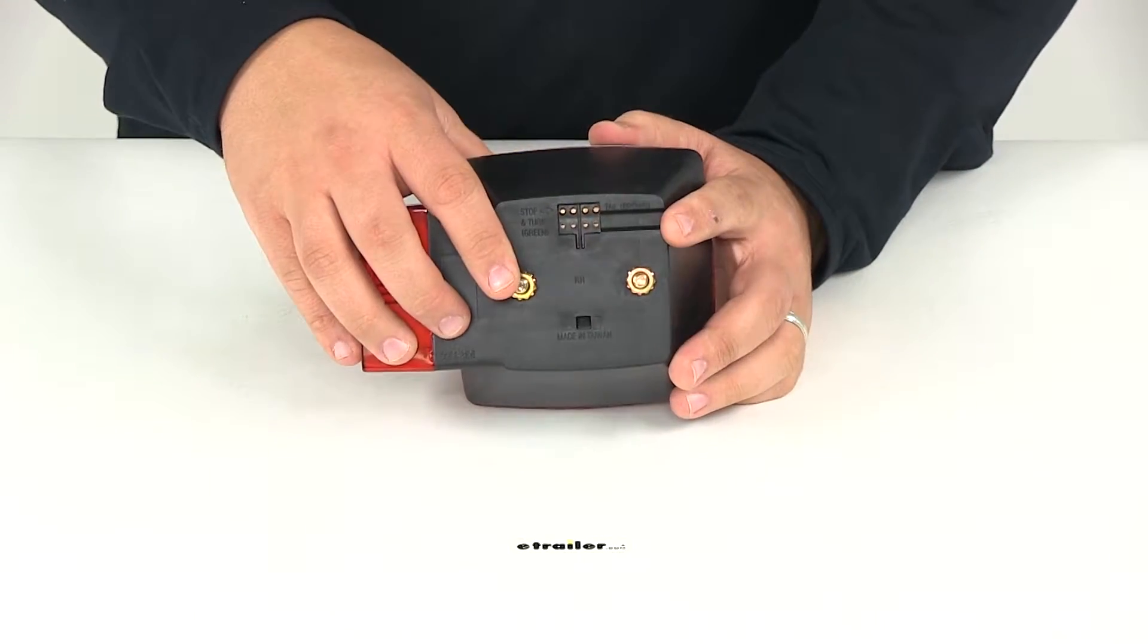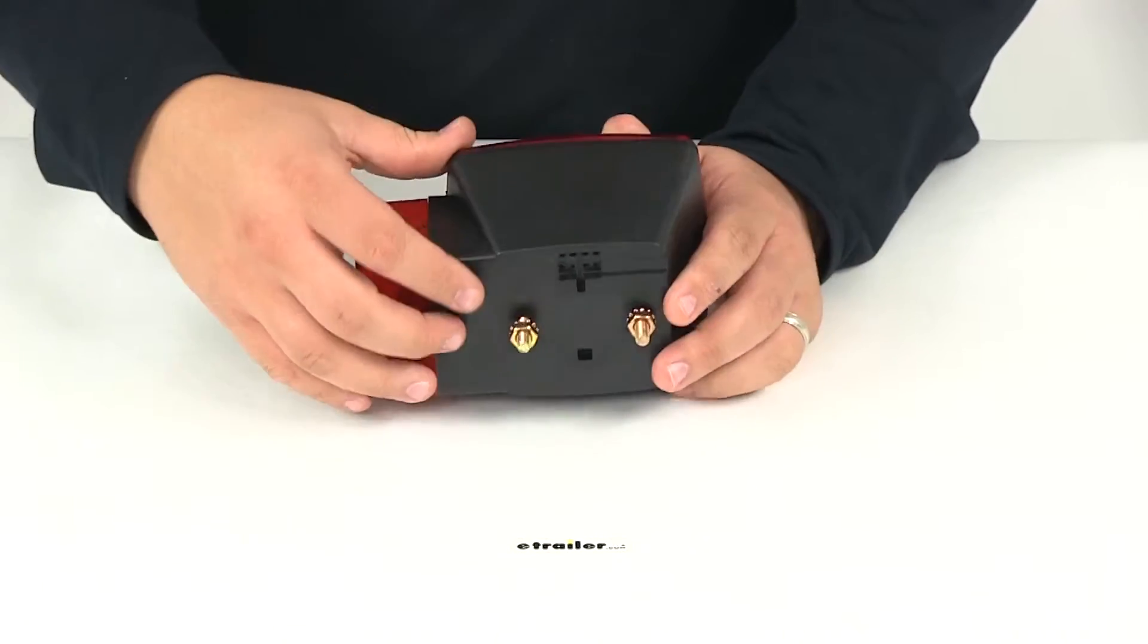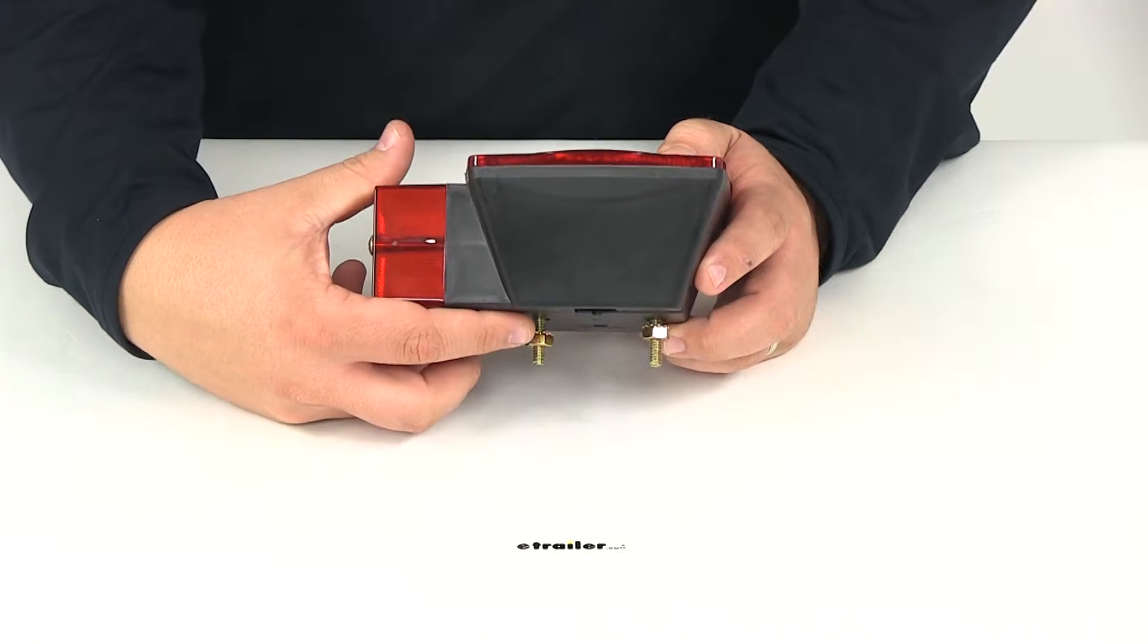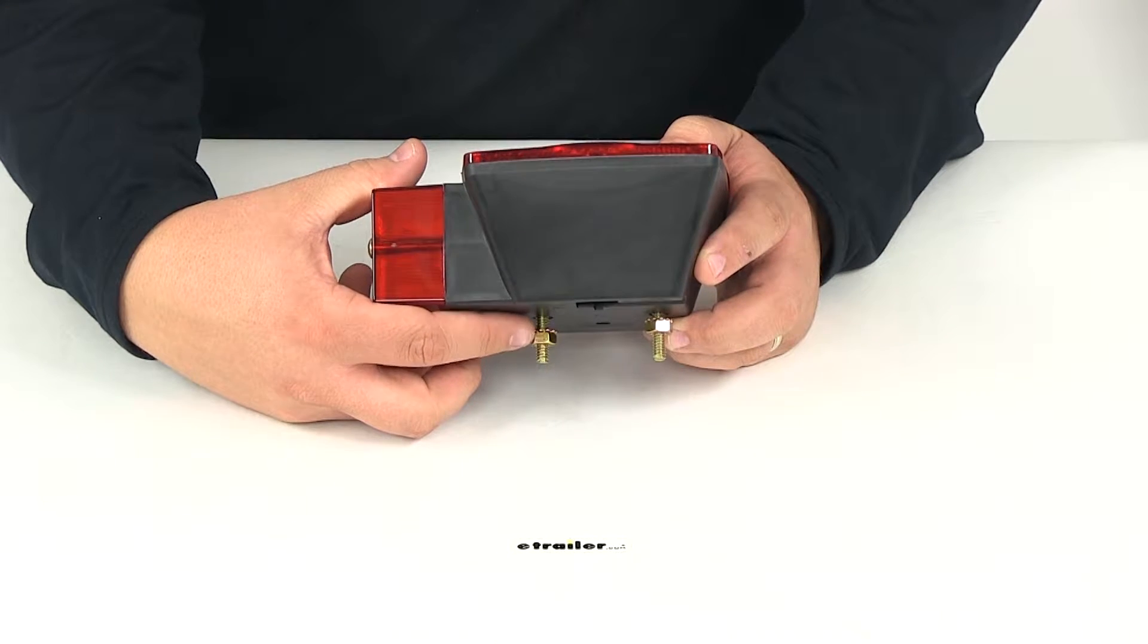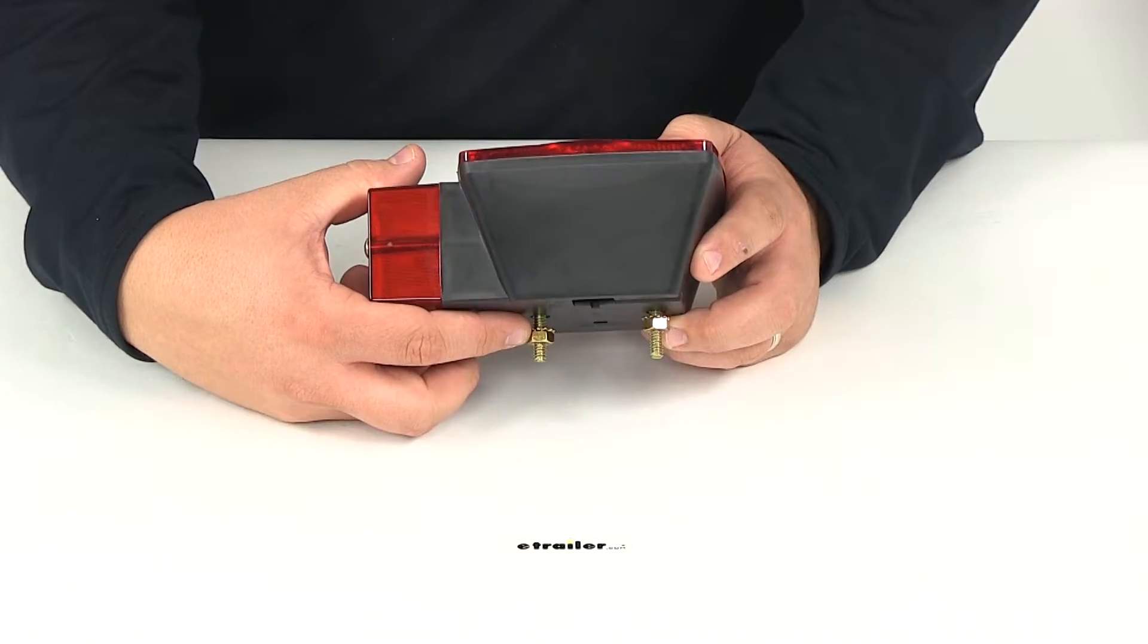You can ground straight to that. It's got the nice star-shaped washer there on one side of the nut. That way it can get into the surface really well for a nice ground connection.